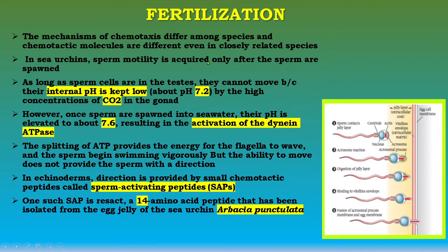In sea urchins, sperm motility is acquired only after the sperm are spawned. As long as sperm cells are in the testes, they cannot move because their internal pH is kept low at about 7.2 by the high concentration of carbon dioxide in the gonads. Once the sperm are spawned into sea water, their pH is elevated to about 7.6, which results in activation of the dynein ATPases. The splitting of ATP provides the energy for the flagella to wave and the sperm begin swimming vigorously, but the ability to move does not provide direction.